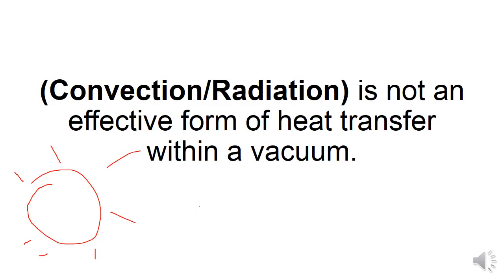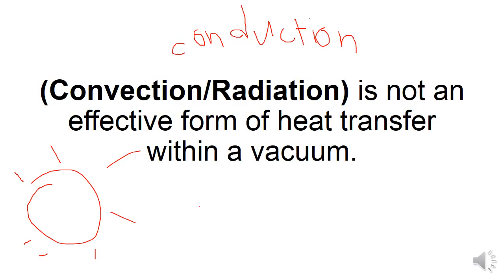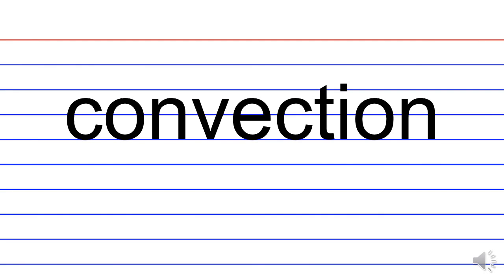Convection is heat transfer in gas and liquid molecules — if cold water comes in contact with hot water, it warms up the water. Then we have conduction: that's heat transfer through solid objects. If you touch a hot pot or a curling iron, the heat goes from the solid metal to your hand — that's conduction. So which one can't occur in a vacuum? That would be convection — heat transfer through fluids, meaning both gases and liquids. Convection cannot occur in a vacuum.